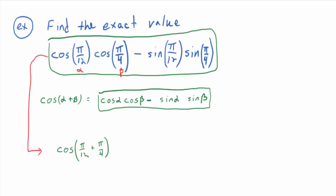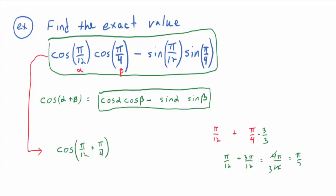Reduce this to cosine of pi/3. The cosine of pi/3 is one-half. So the exact value is one-half.